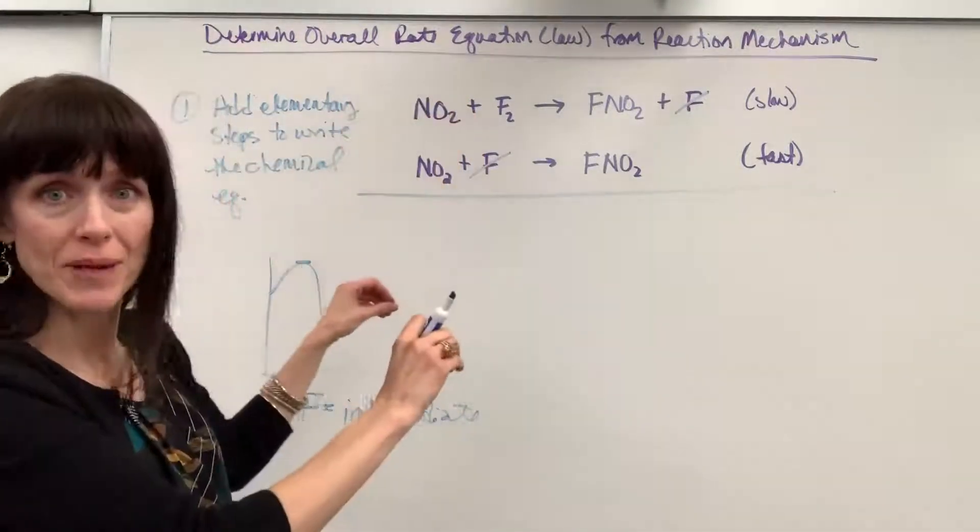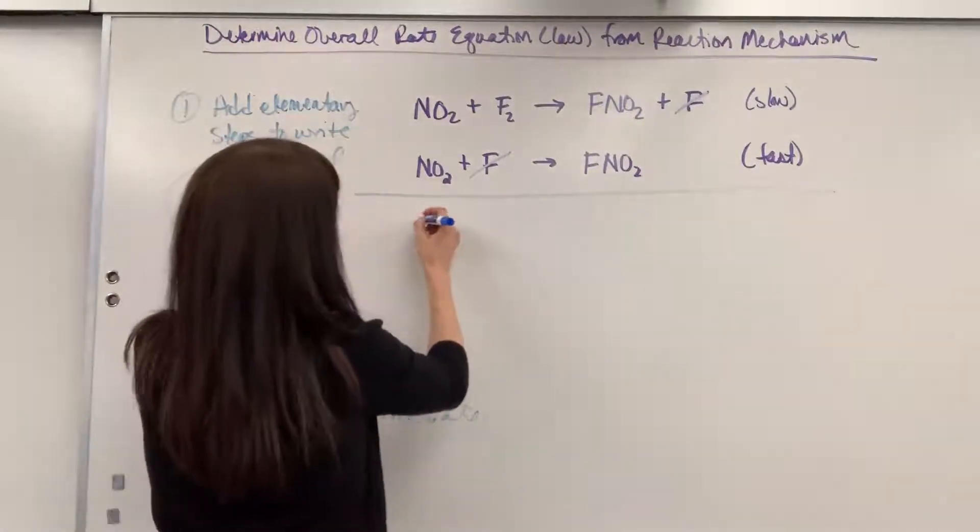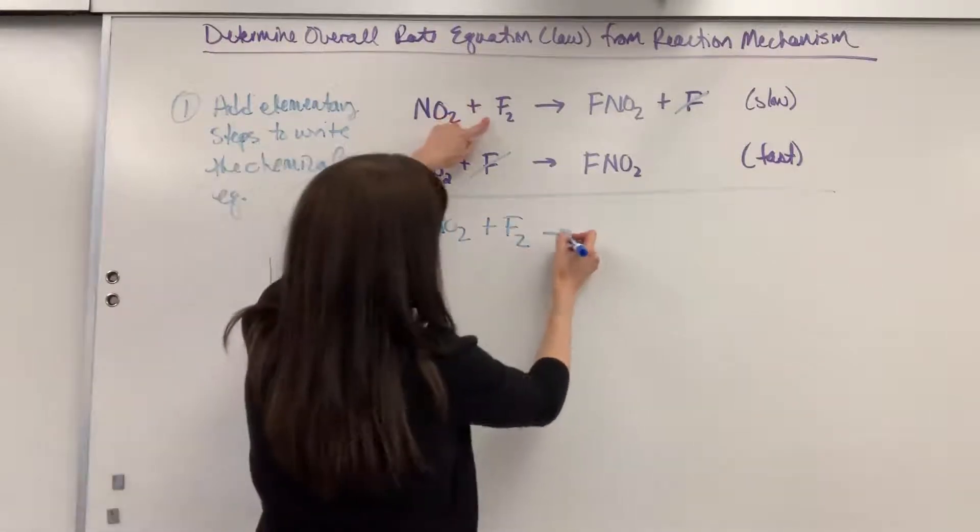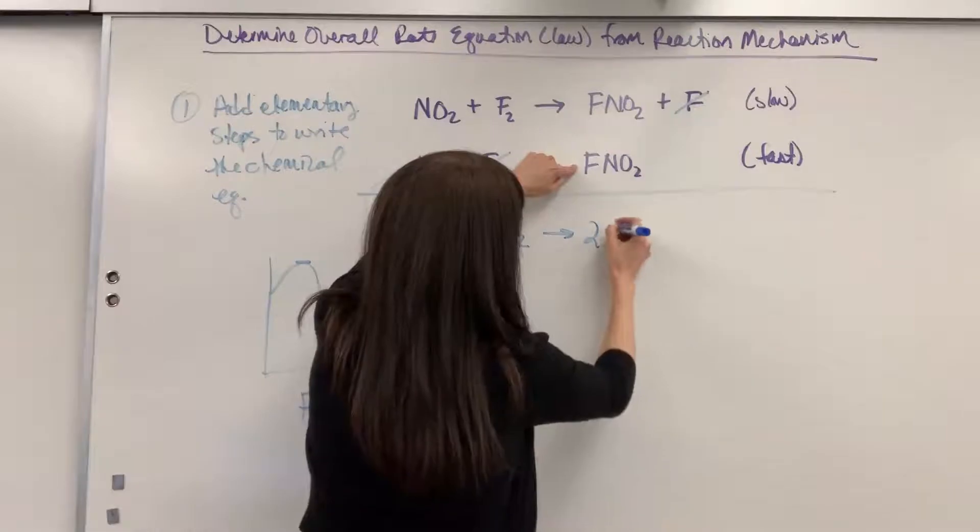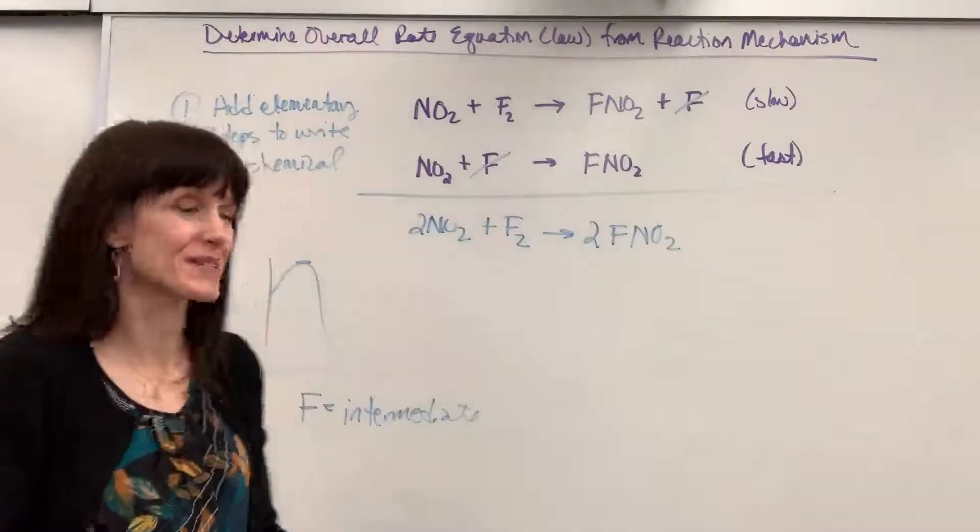So let's add up everything we have remaining, reactants and products. We're going to have two NO2 plus F2 yields two FNO2. Okay, so there's my first step.